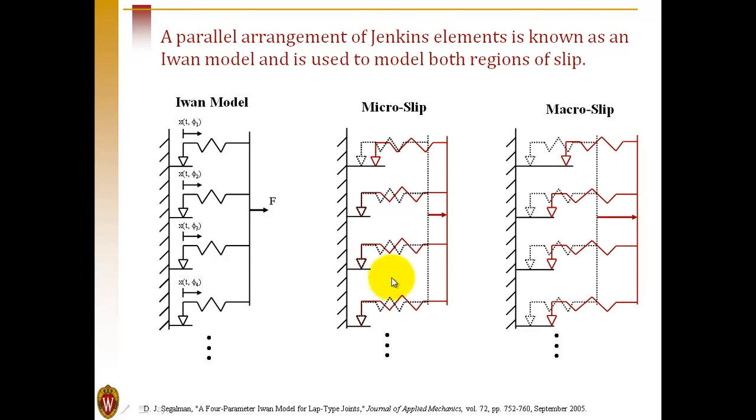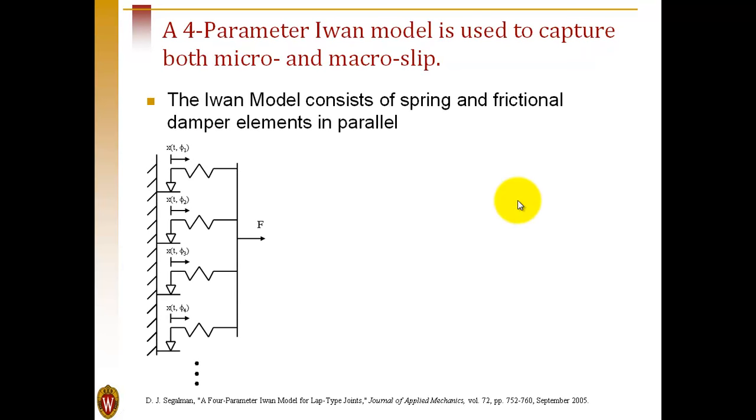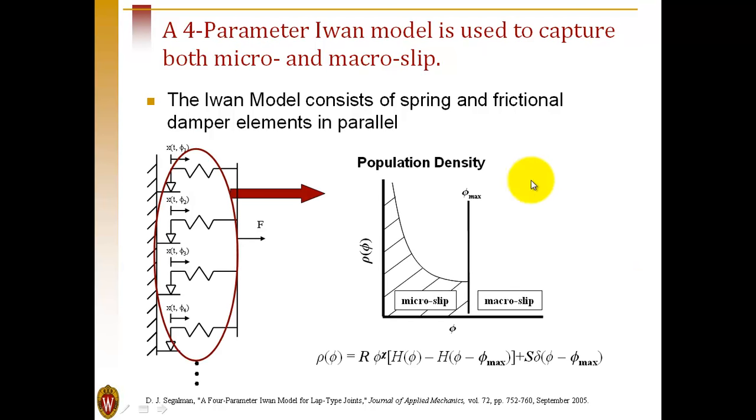A larger load will give macro-slip, where every one of the sliders breaks free. An IWAN model is just an arrangement of sliders in parallel like this, but we choose the strength of the sliders to follow a certain distribution. We call that the population density. This distribution is chosen to match what's been observed experimentally and in tests on structures with joints. This is the population density in Segalman's four-parameter IWAN joint.